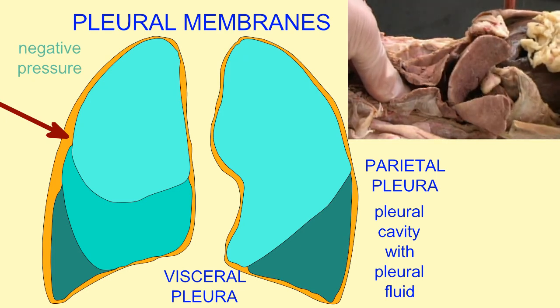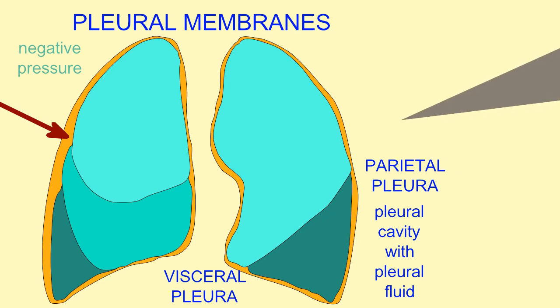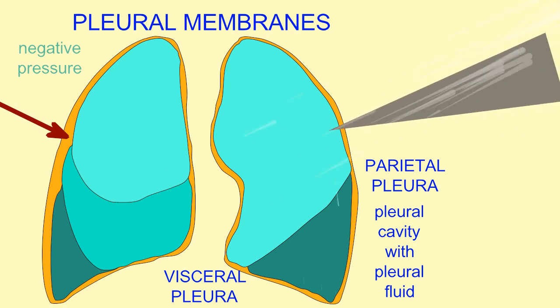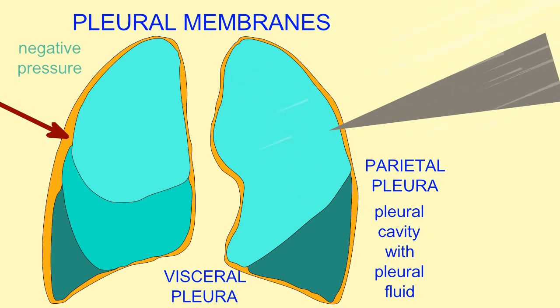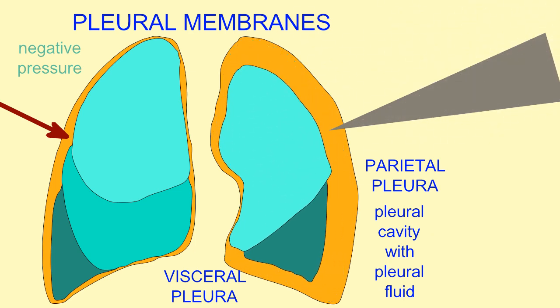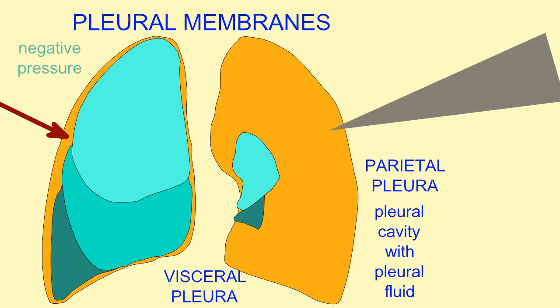Should the puncturing of the thoracic cavity result in atmospheric air being introduced into the pleural cavity, this would collapse a lung.